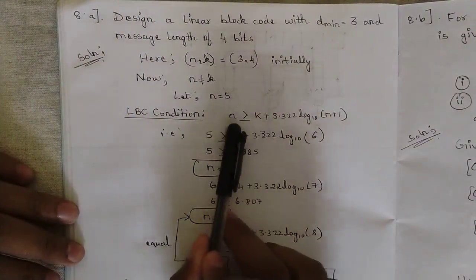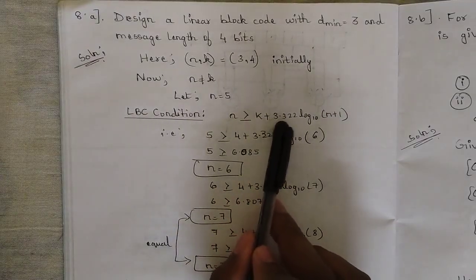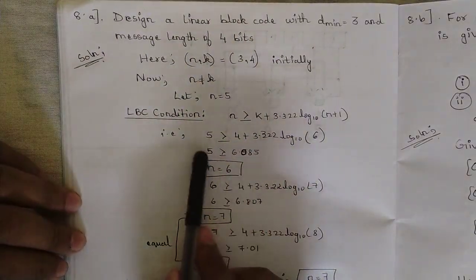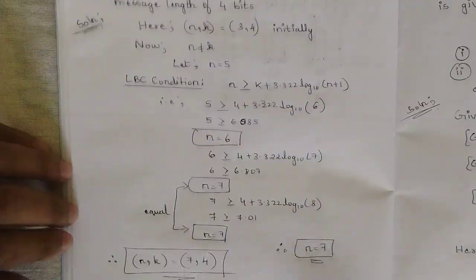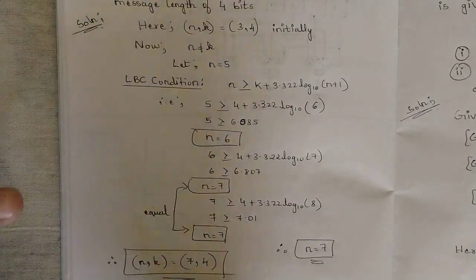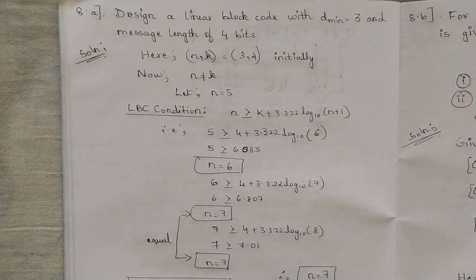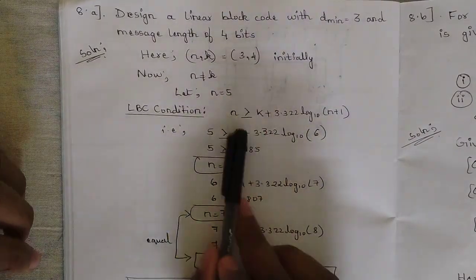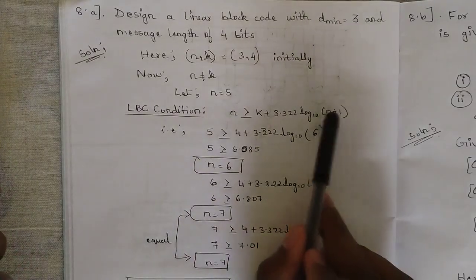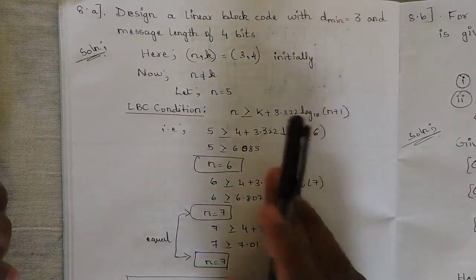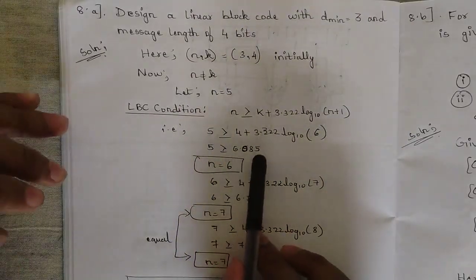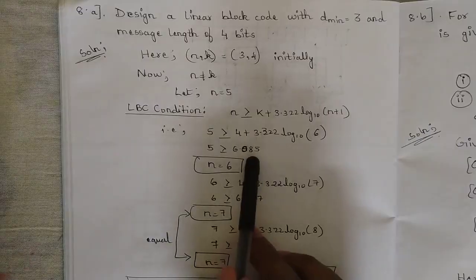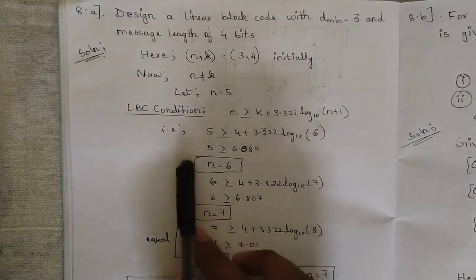According to the LBC condition, n should be greater than or equal to k plus 3.322 times log base 10 of (n+1). Iterate until consecutive values converge. For n=5: 5 ≥ 4 + 3.322 × log₁₀(6), giving 6.085, which rounds to 6. So the new value of n for the next iteration is 6.